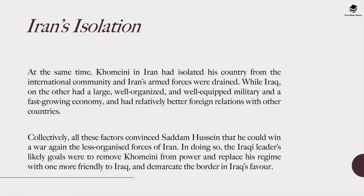Another contributing factor was Iran's isolation. At the same time, Khomeini had isolated Iran from the international community and Iran's armed forces were drained, while Iraq had a well-equipped military, a fast-growing economy, and relatively better foreign relations. Collectively, these factors convinced Saddam Hussein that he could win a war against Iran, with likely goals of removing Khomeini from power, replacing his regime with one more friendly to Iraq, and demarcating the shared border.